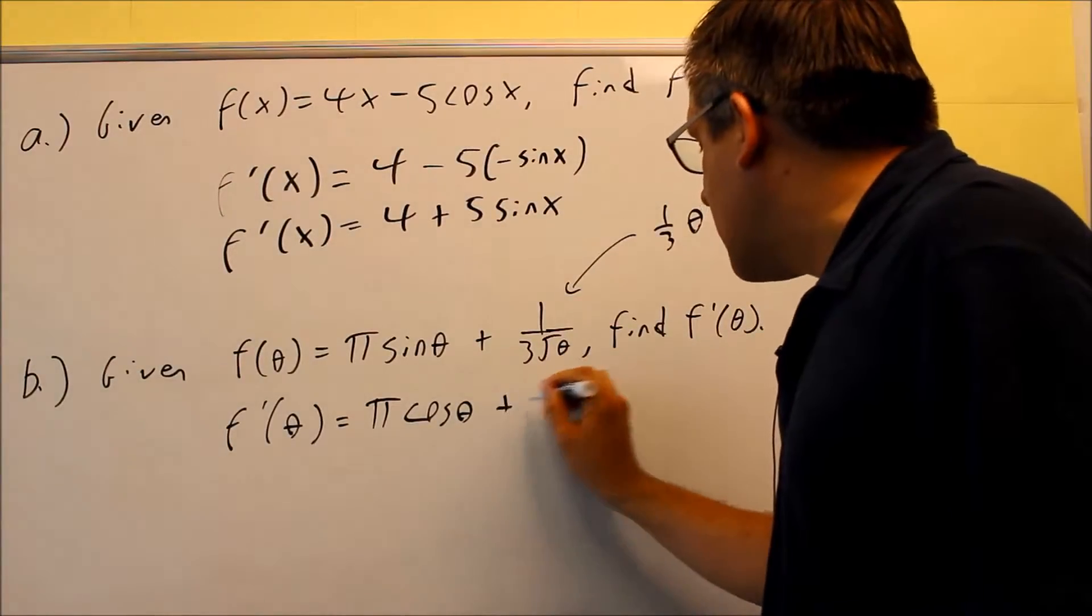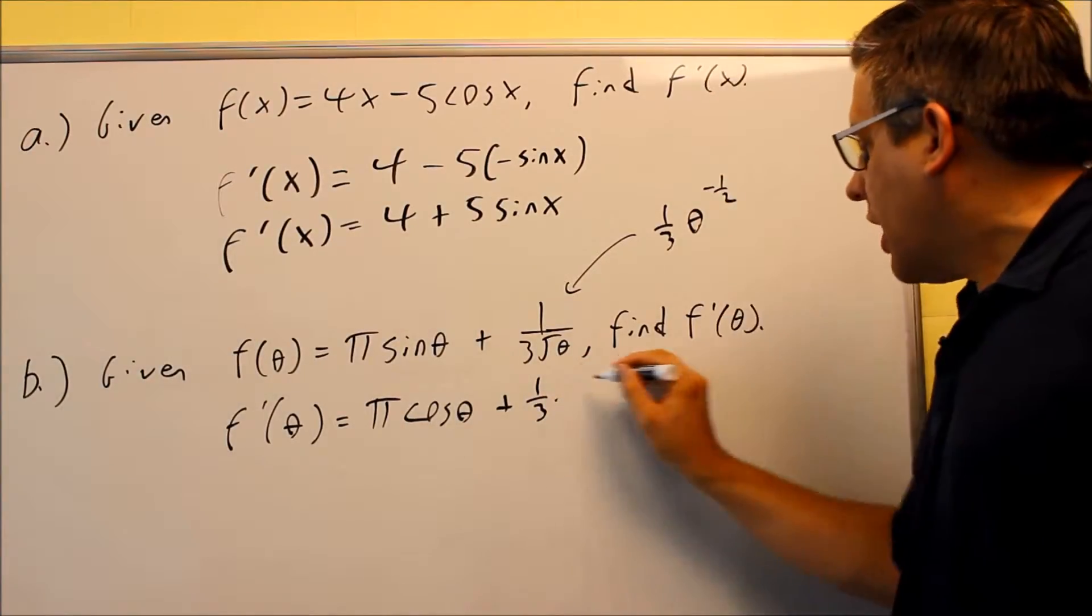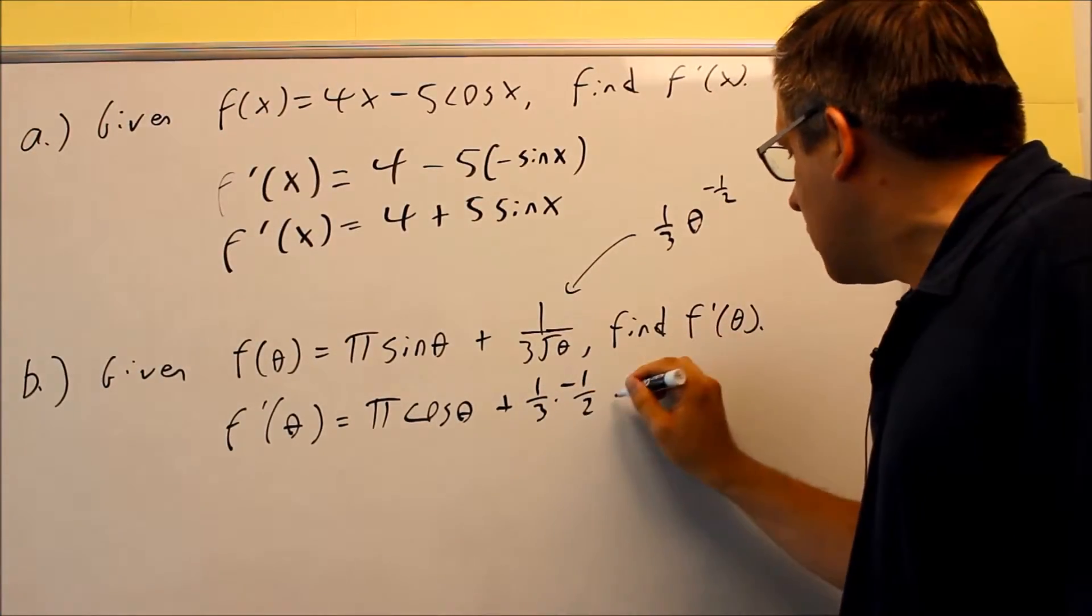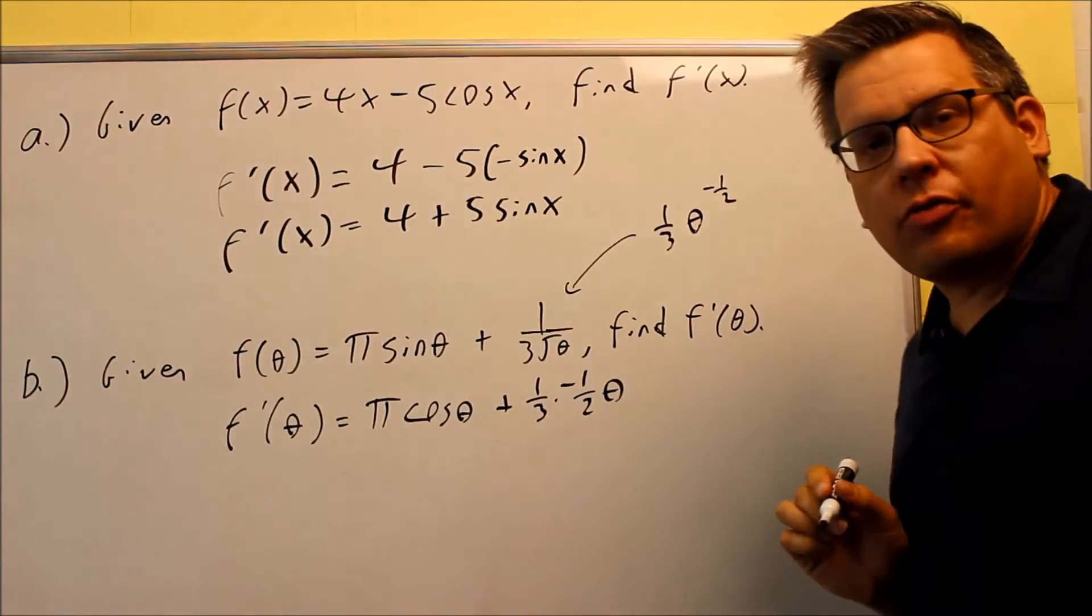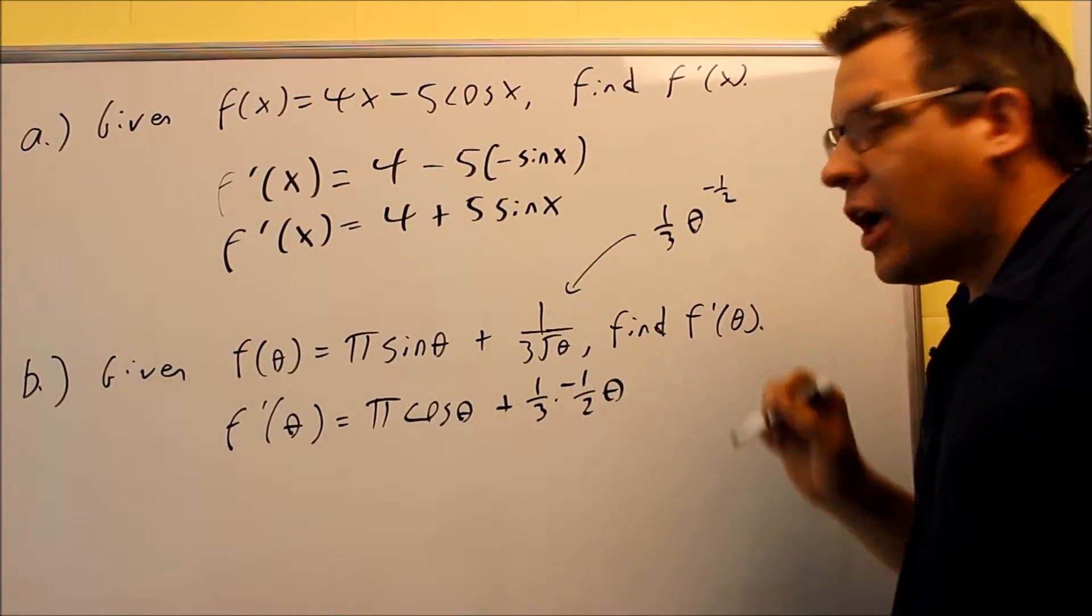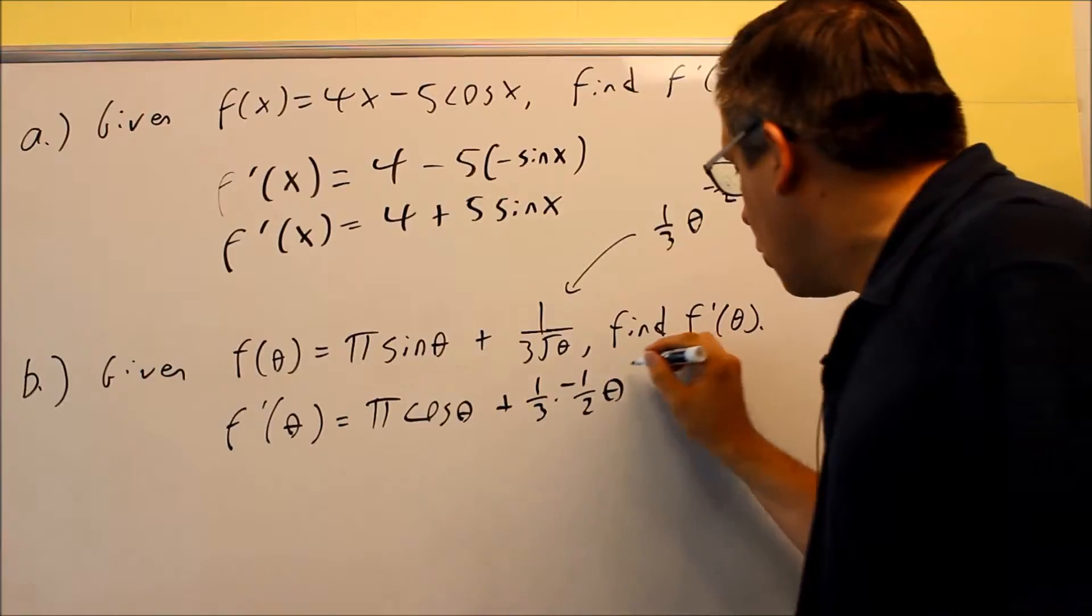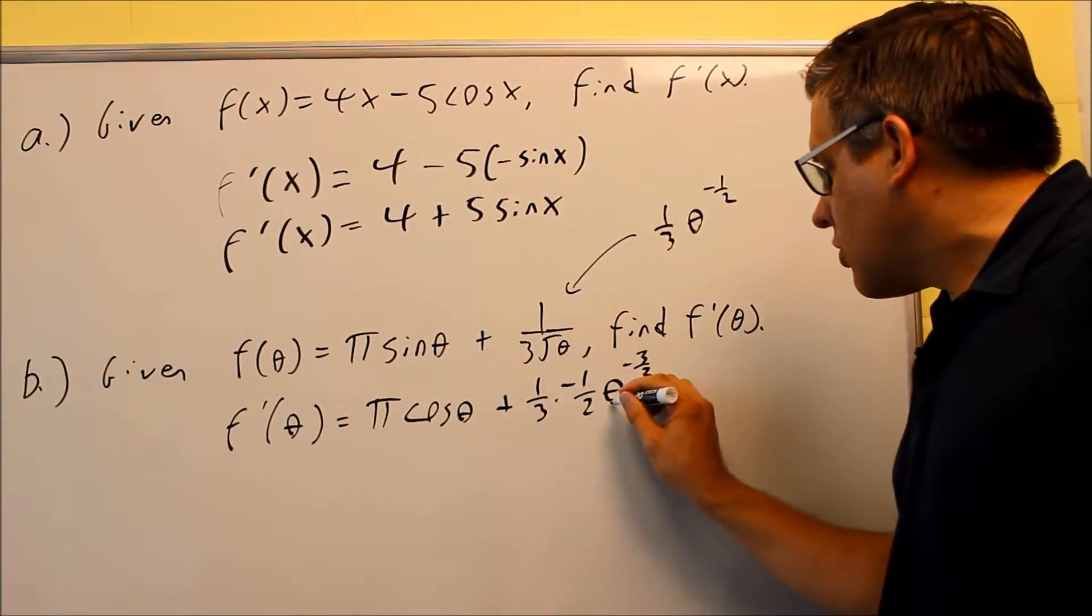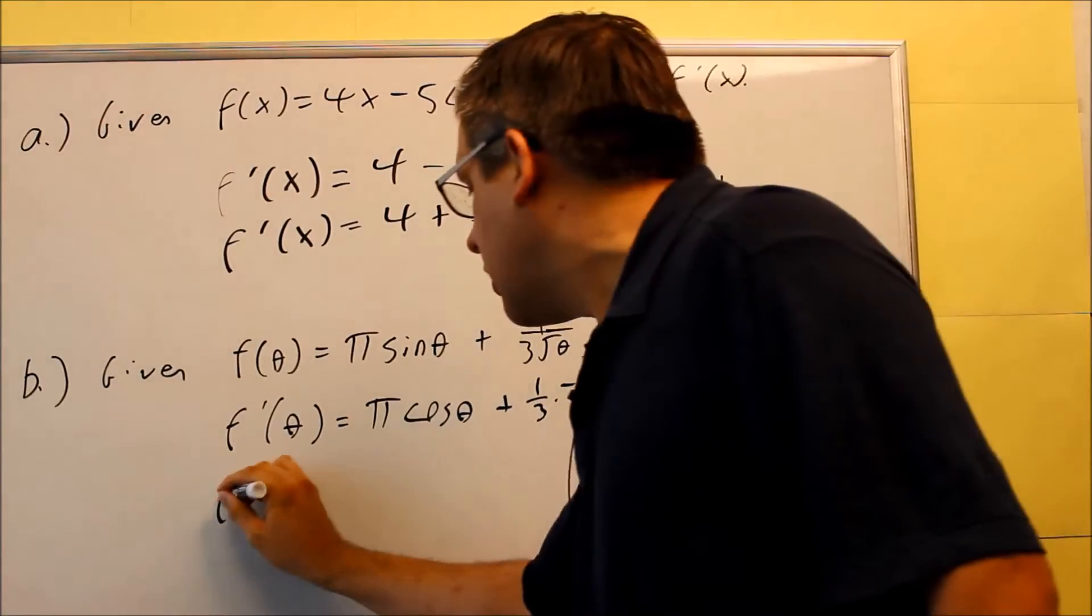So what happens is I have 1/3 and then the -1/2 is going to come down in front, θ, and then subtract one from the exponent. So -1/2 minus 2/2 will give you -3/2. So now it's just a matter of cleaning it up to write the answer.